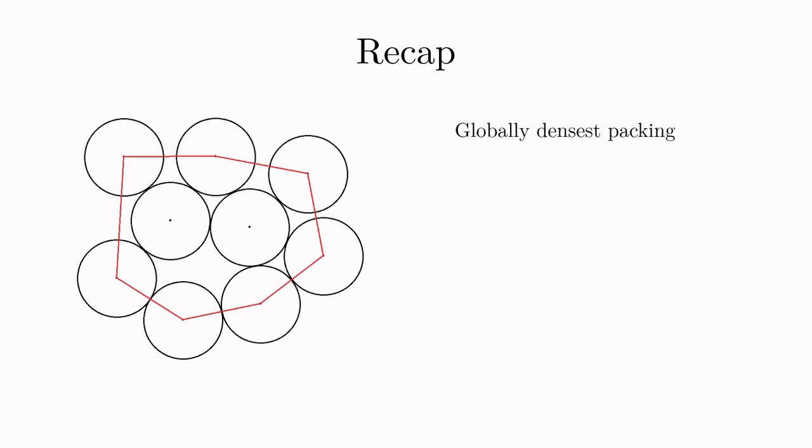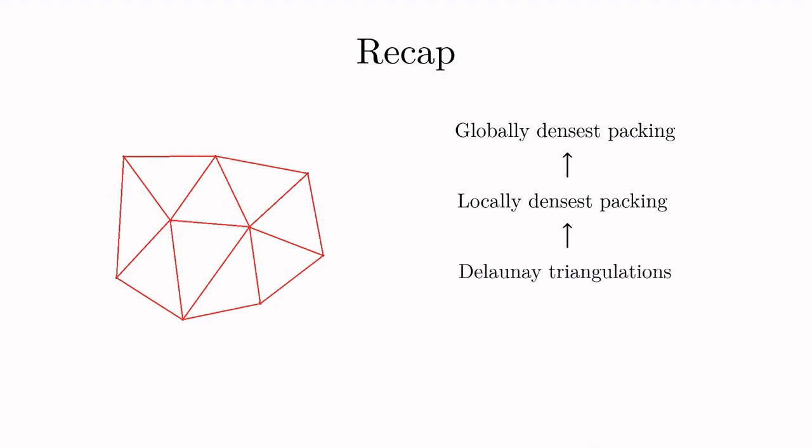Our question was about the globally densest packing. We first asked the local question instead and drew in a bunch of triangles. We showed that if we're only considering three circles then the optimal arrangement is the one where the centers form an equilateral triangle of side length 2. We discussed how the local notion of density relates to the global notion of density and concluded that the hexagonal packing is optimal once we've shown that we can always find nice triangulations. This led us naturally to consider the notion of Delaunay triangulations. And in order to show that these always exist, we resorted to the idea of Voronoi diagrams.